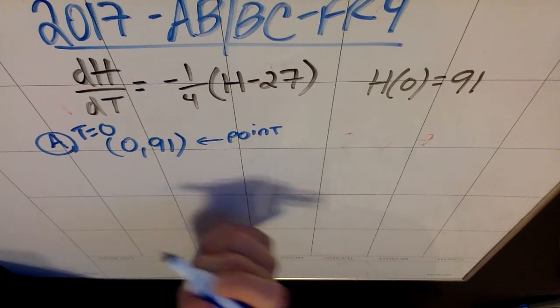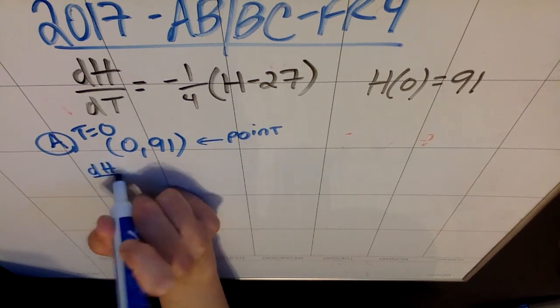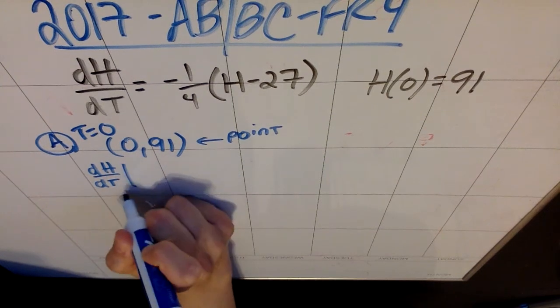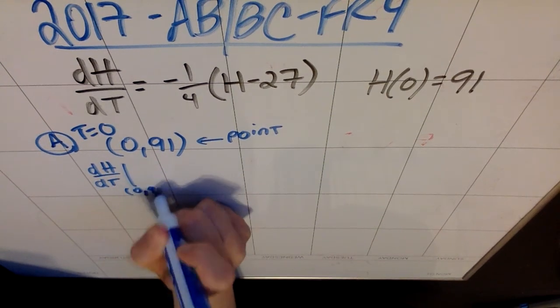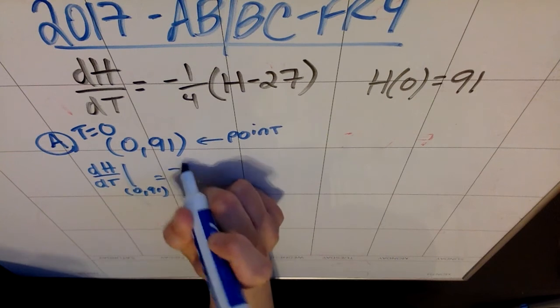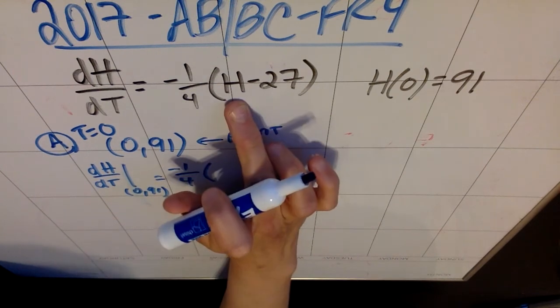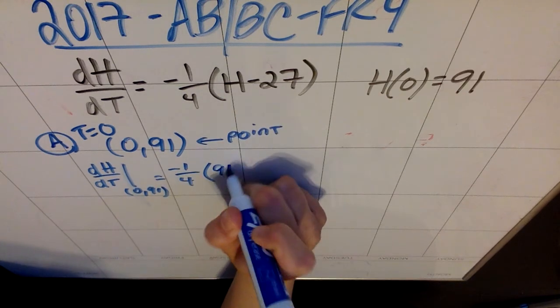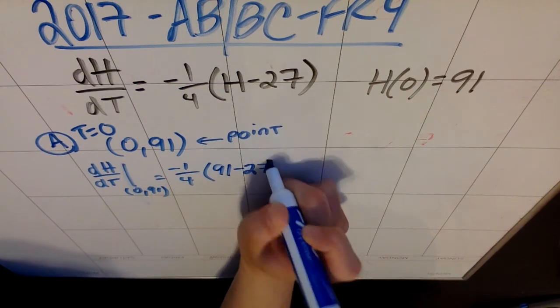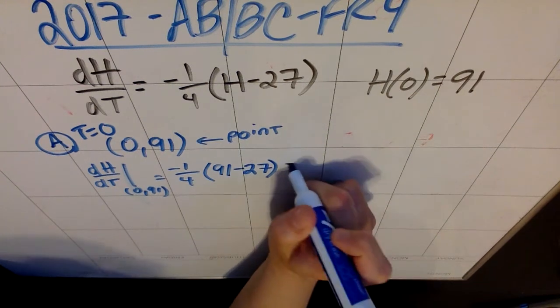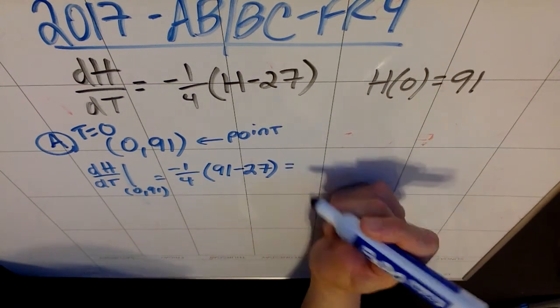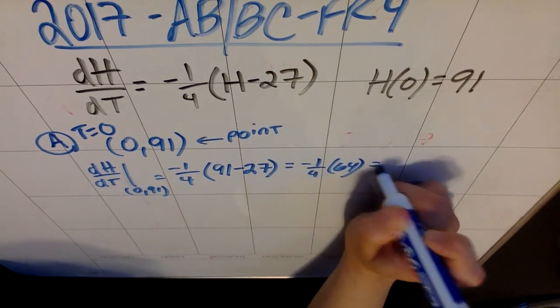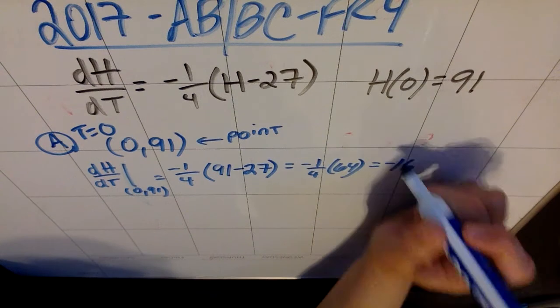The second thing I need is a slope. My slope is going to be dH/dt evaluated at (0, 91). The mistake people make here is they accidentally plug in 0 for H. H isn't 0, H is 91. So it's going to be 91 minus 27. I end up getting that this is negative 1/4 times 64, so it's negative 16. Now I have a slope.